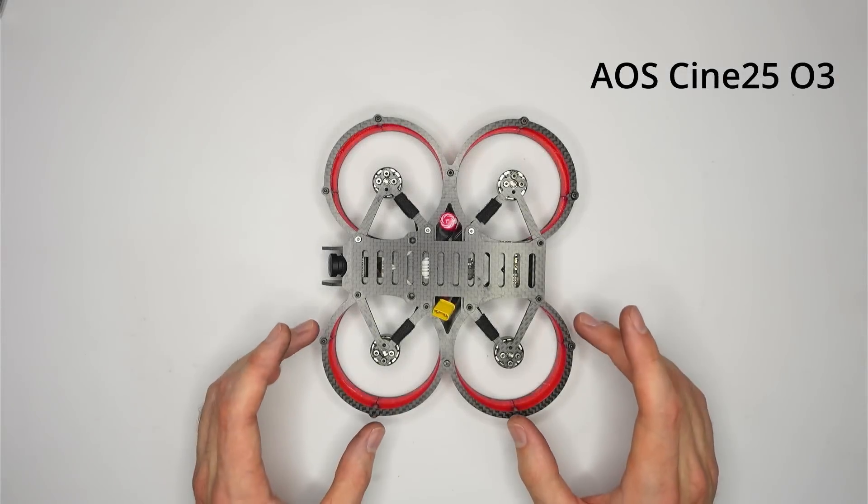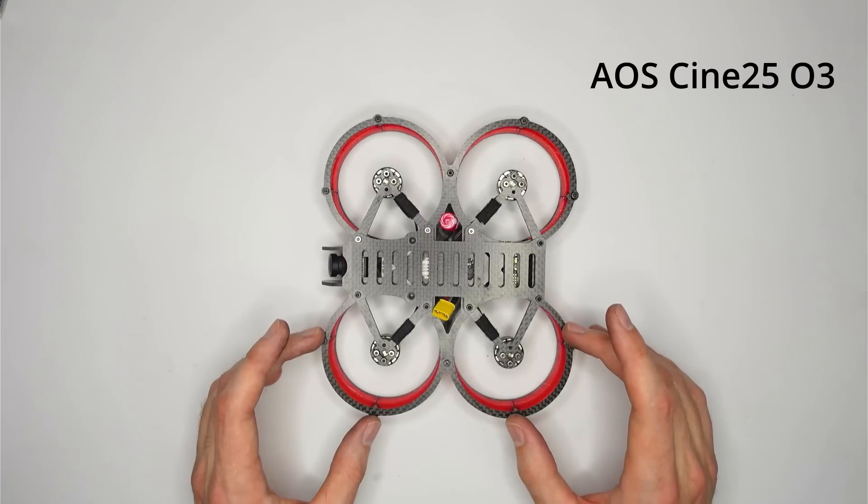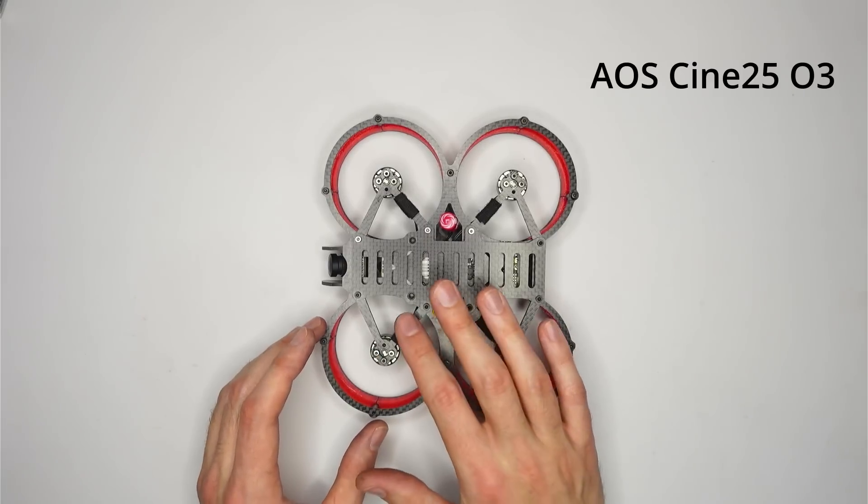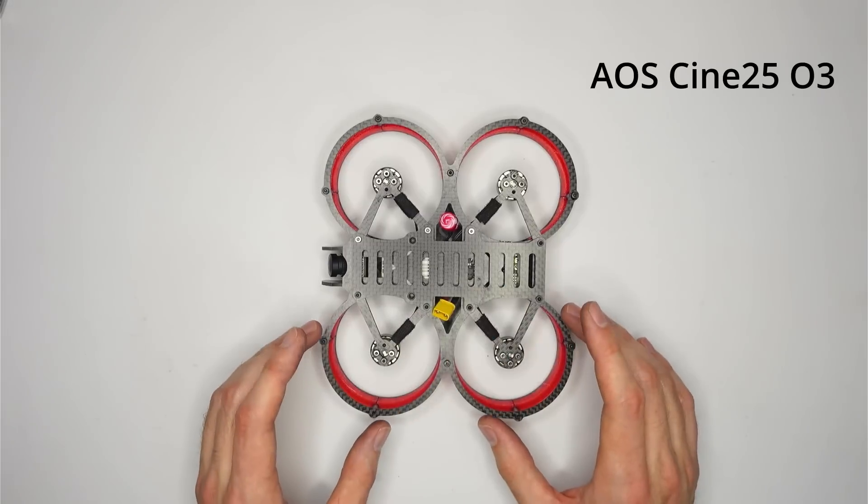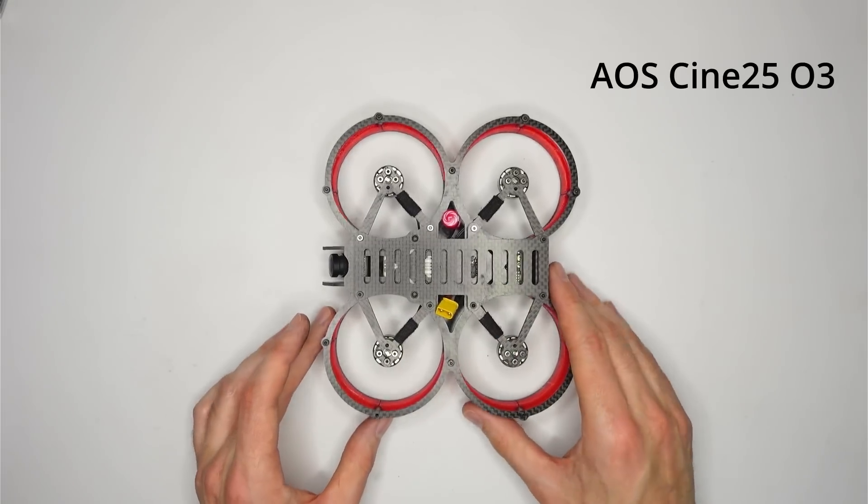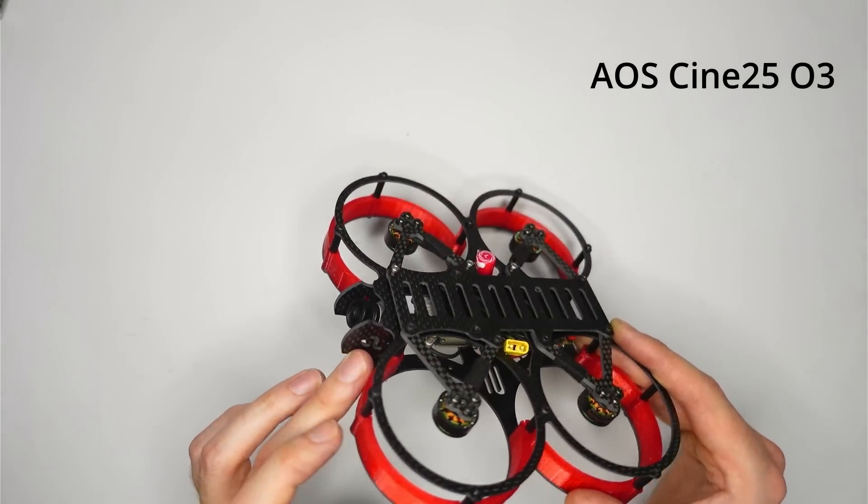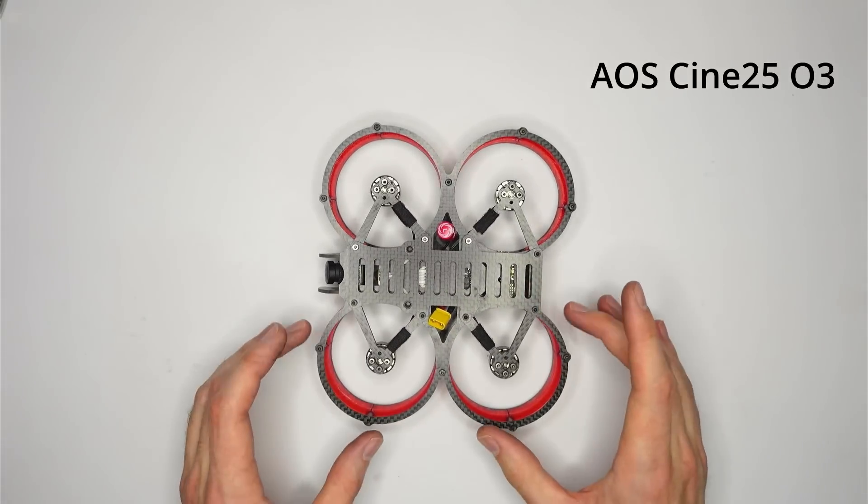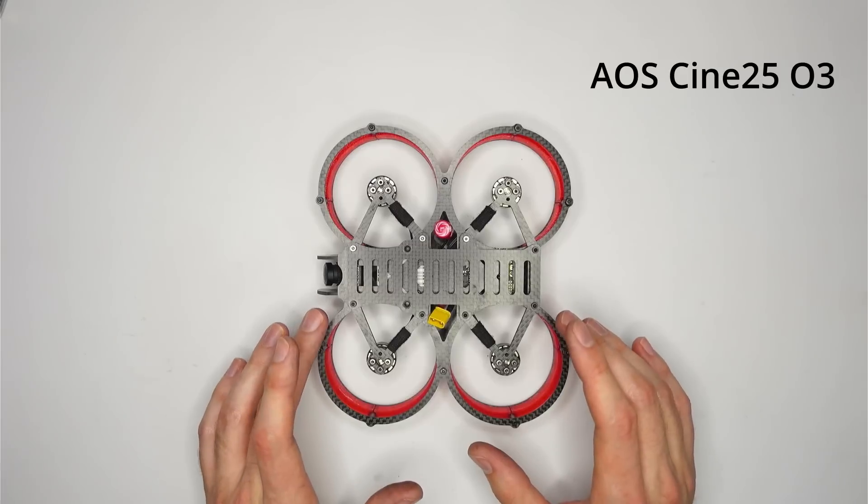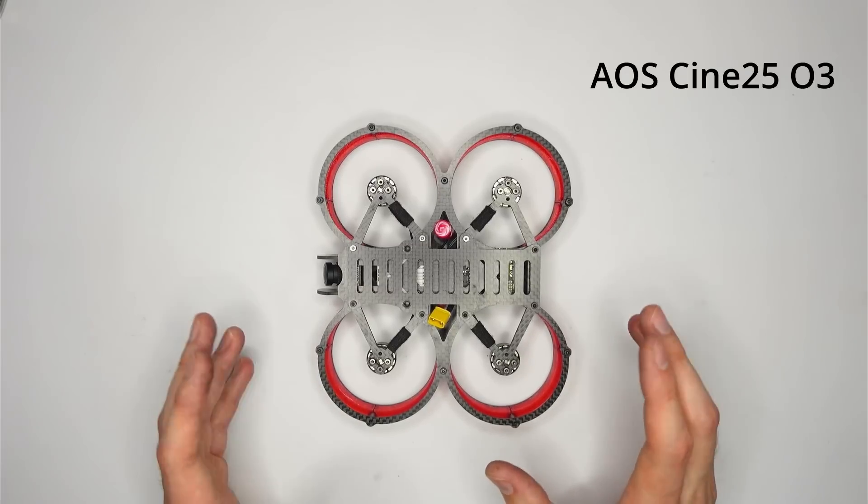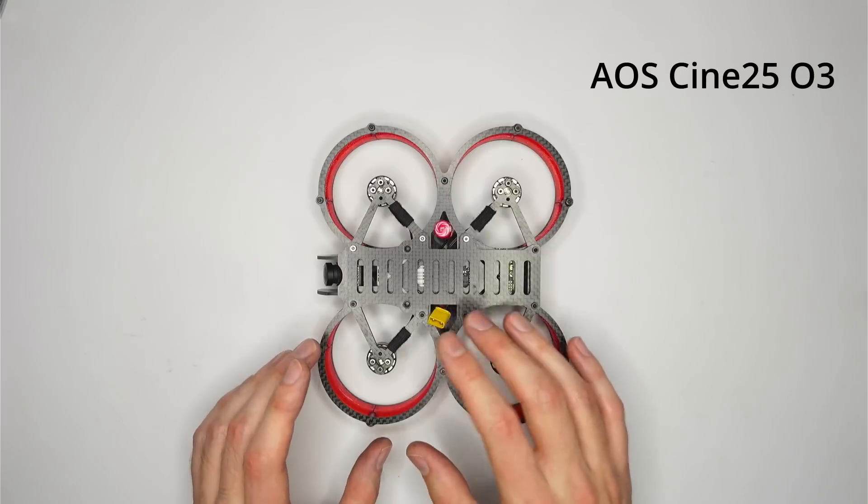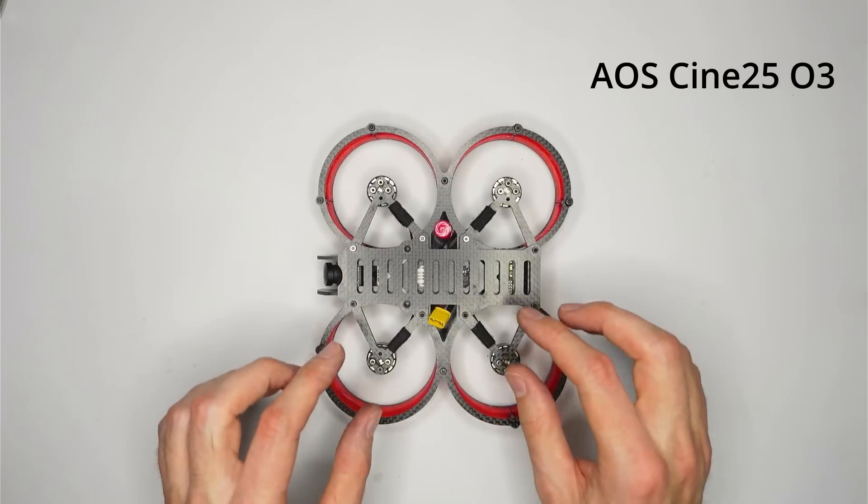And this is the final frame that I want to show you, the AOS Cine 2.5 O3. And this is a 2.5 inch Cinewhoop, designed to carry a naked GoPro, fly in close proximity to people, and stay under 250 grams. Again, the camera plates have been updated to support the O3 air unit. And I think this is another platform where O3 really makes sense. You get very nearly the onboard recording quality of a naked GoPro without the weight, and it fits beautifully into a small platform like this.